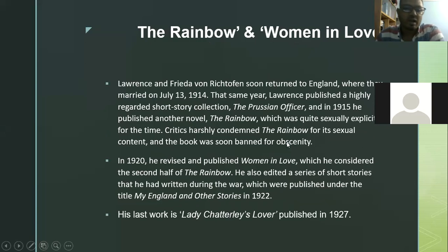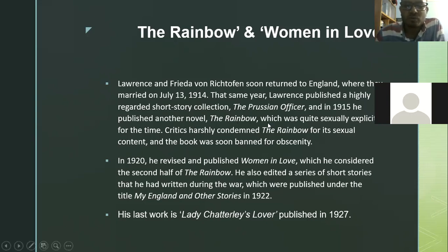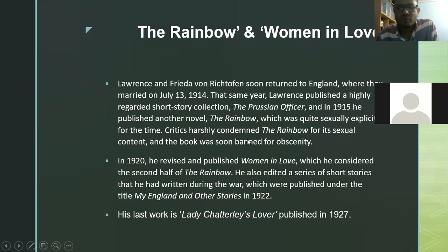Lawrence and Frieda von Richthofen soon returned to England, where they married on July 13, 1914. That same year, Lawrence published a highly regarded short story collection titled The Prussian Officer. In 1915, he published another novel, The Rainbow, which was quite sexually explicit for the time. This book was also banned due to sexual elements — critics harshly condemned The Rainbow for its sexual content and the book was soon banned for obscenity.